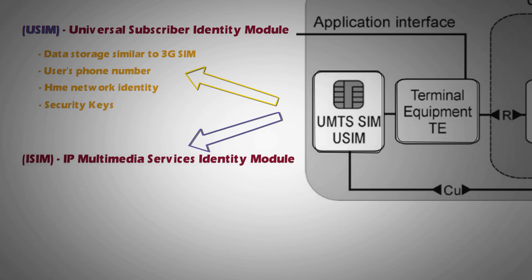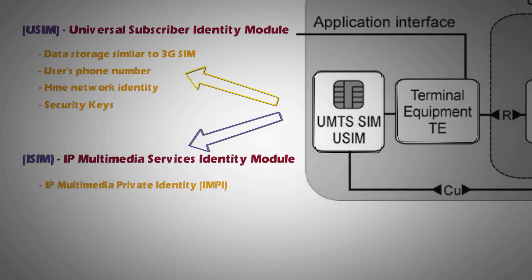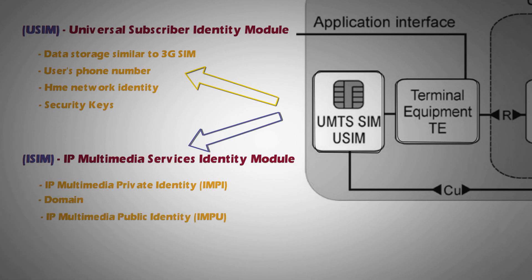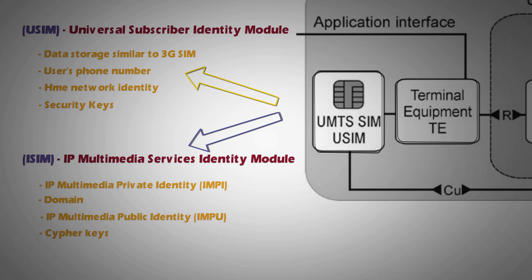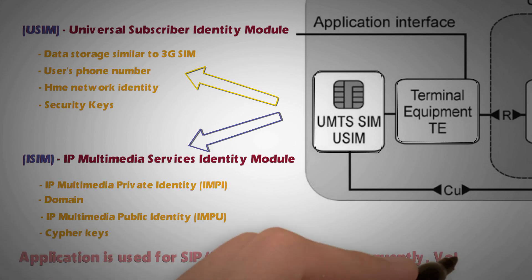The SIM card can also have an ISIM module. ISIM carries information used in SIP protocols, such as the IP Multimedia Private Identity (IMPI), domain, IP Multimedia Public Identity (IMPU), and cipher keys used to encrypt information. This application is used for SIP or IMS procedures, and consequently for VoLTE calls.